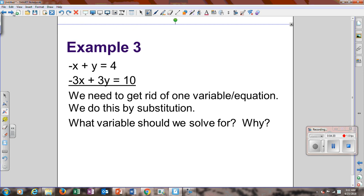Example 3, we don't have anything by itself yet. And so what we're going to do is, I'm going to get y by itself because it's a plus y already. So I'm going to add x to the other side in the top equation. Give me y equals x plus 4, or 4 plus x. I plug that into the second equation. Negative 3x plus 3 times x plus 4 equals 10. Distribute the 3. You get negative 3x plus 3x plus 12 equals 10. Those cancel out. You get 12 equals 10. When does 12 equal 10? Never. So there's no solution.